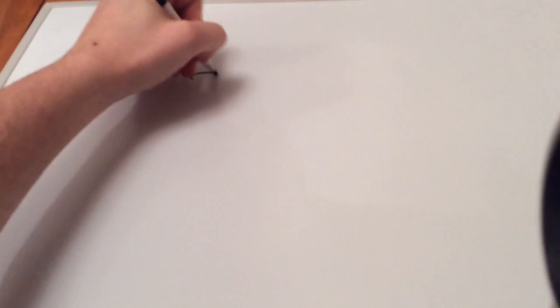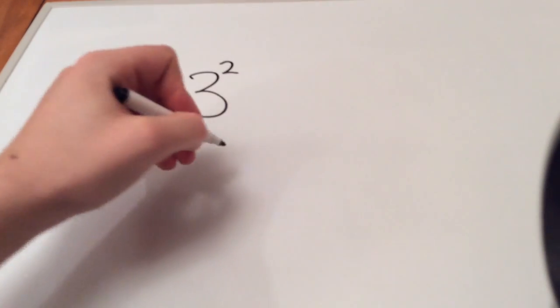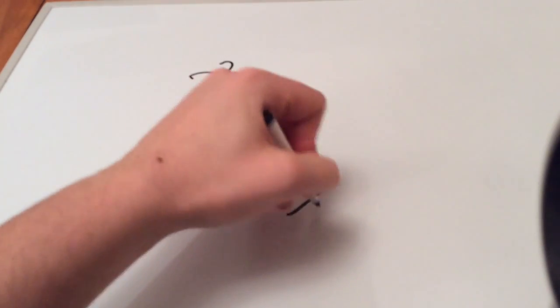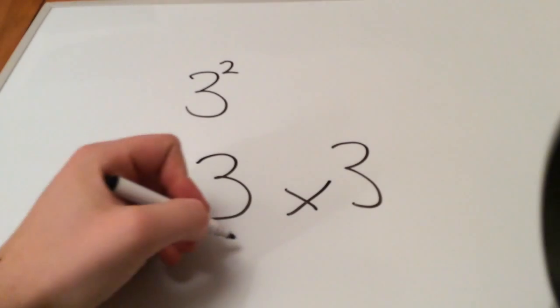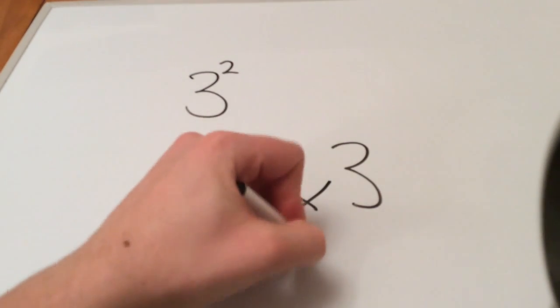Now what does squared even mean? 3 squared is the same as doing 3 times 3. Whenever you square a number, whenever you see the little 2 next to it, it just means times that number by itself. So 3 times 3 is 9, therefore 3 squared equals 9.